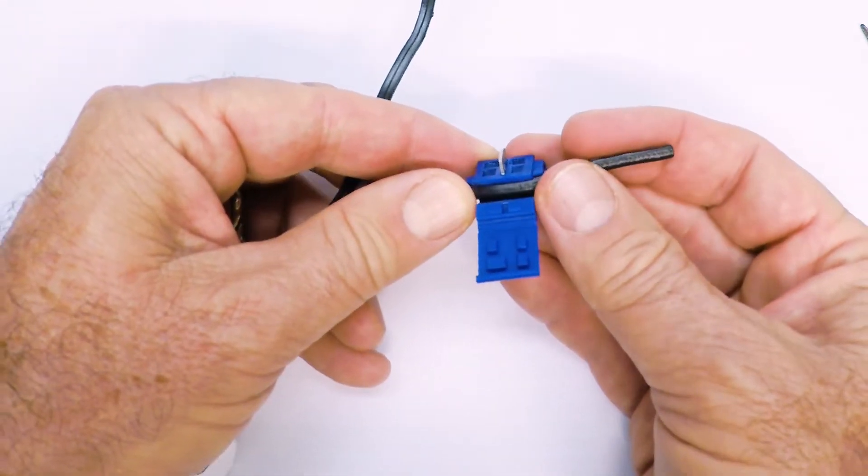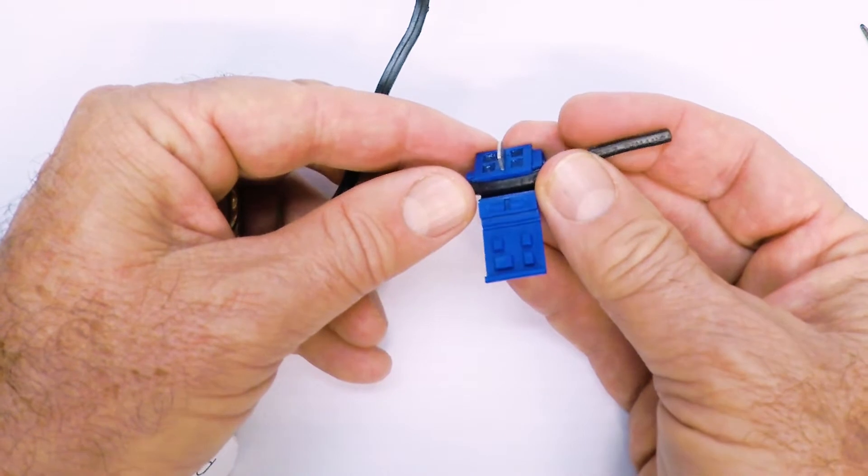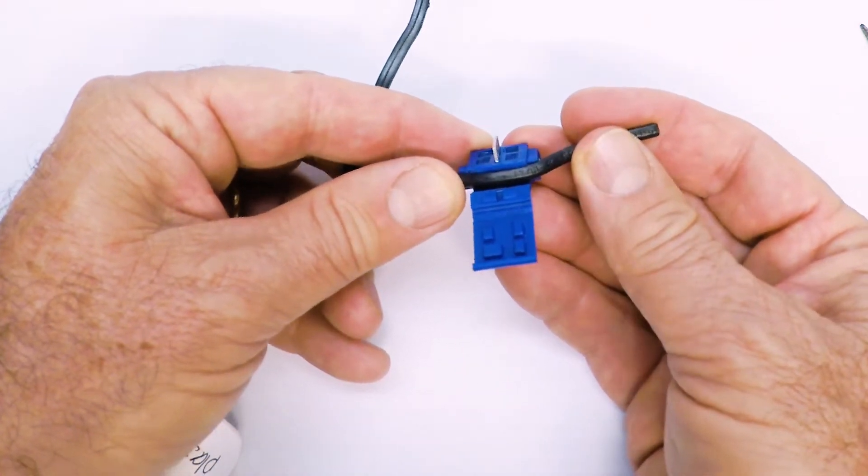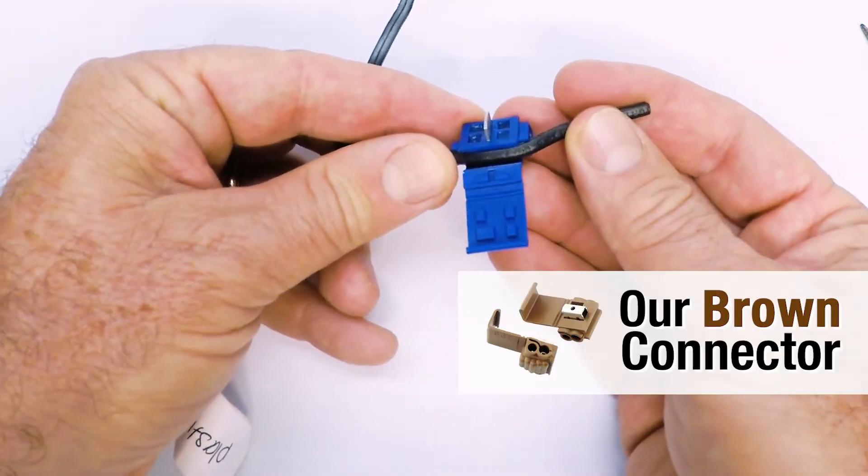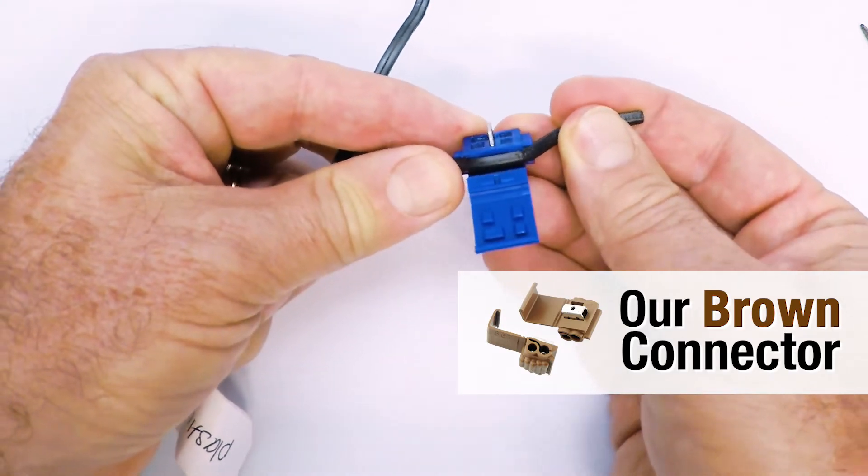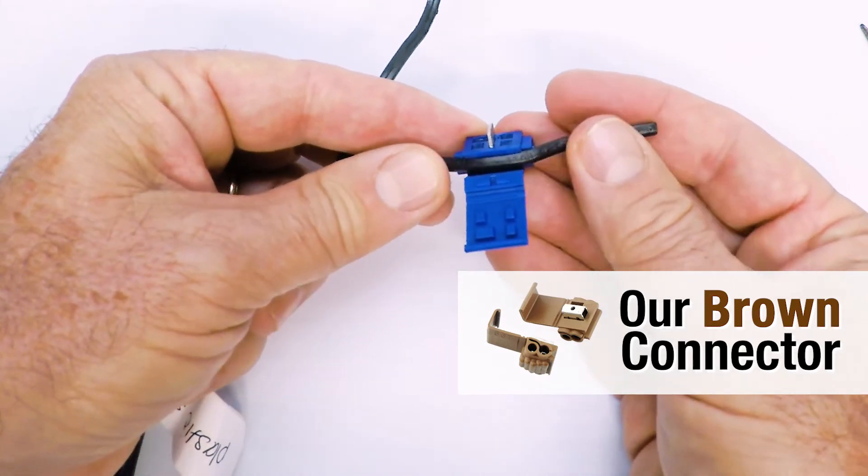The wire seems like it's too thick to go in there, but it will go in most of the time. There are some out there that are just so big and fat, they're not going to go in there. For that, we have a brown connector for that larger wire. But if you're using our wire, you're going to be in good shape.